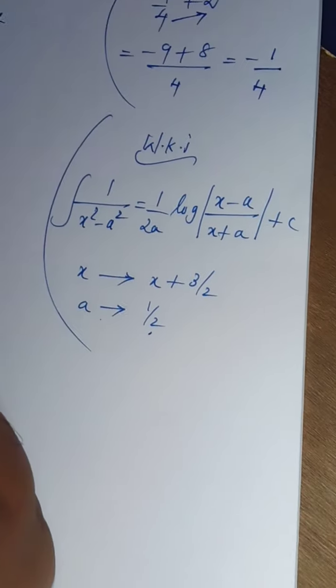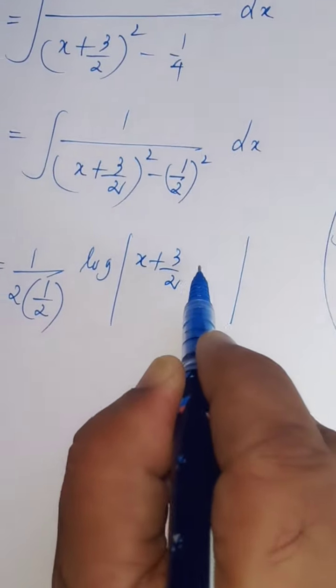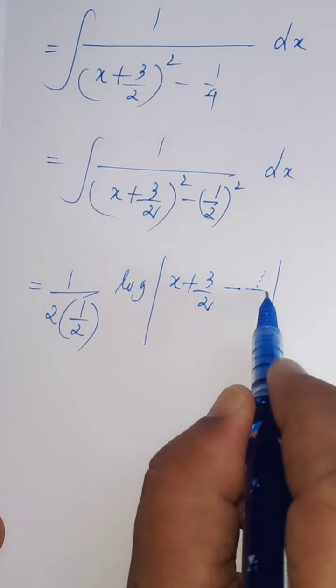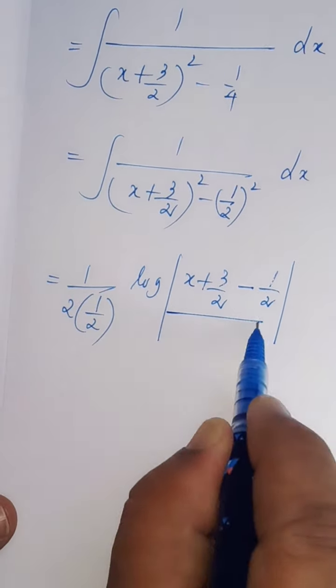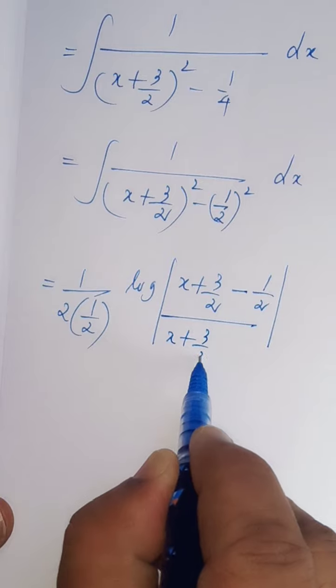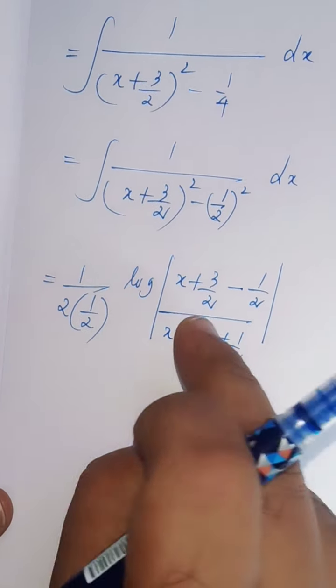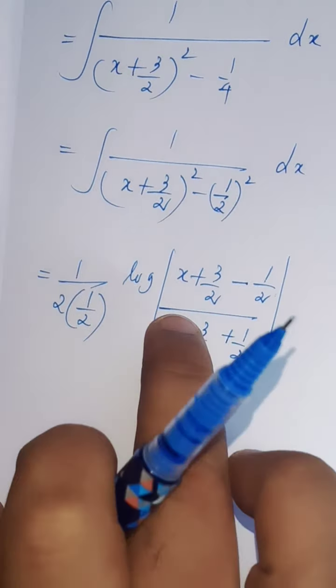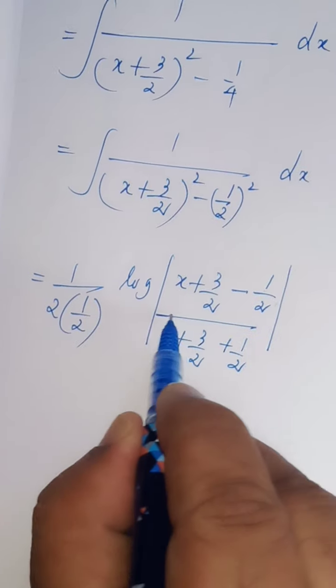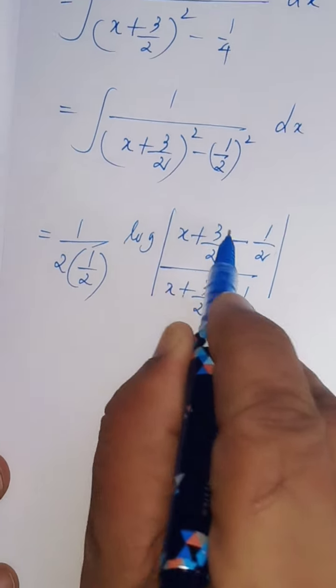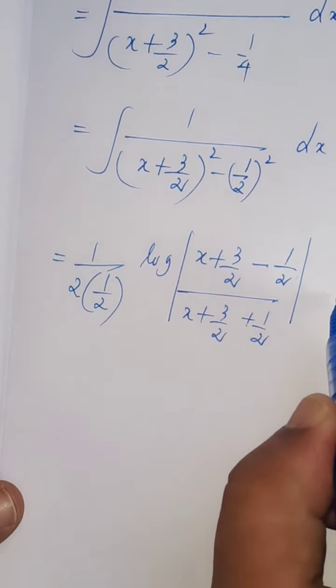This is x, x plus 3 by 2 minus a, a that is equal to 1 by 2, divided by x plus 3 by 2 plus 1 by 2. What is the formula? X minus a, x plus a. The entire expression is x. Plus c.